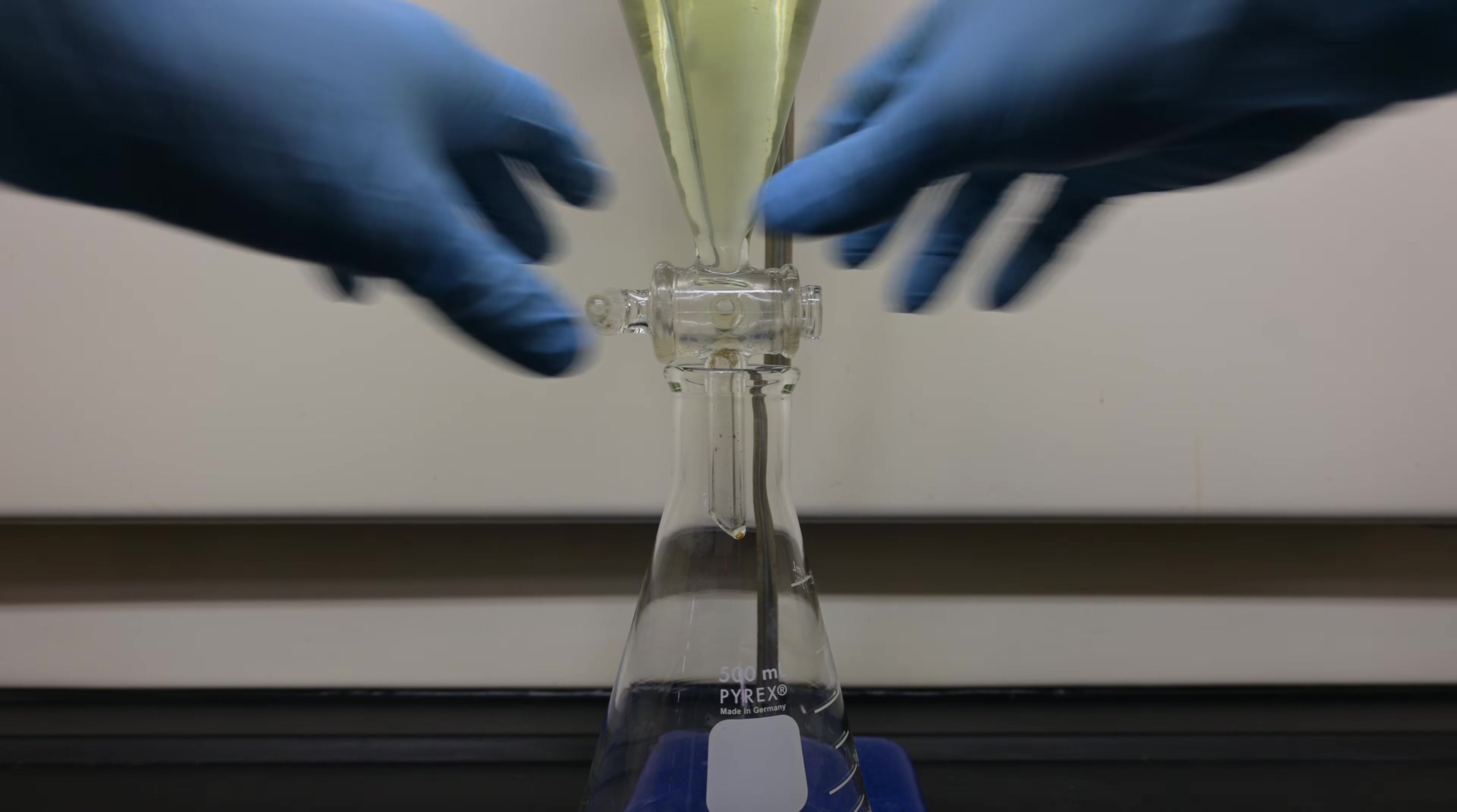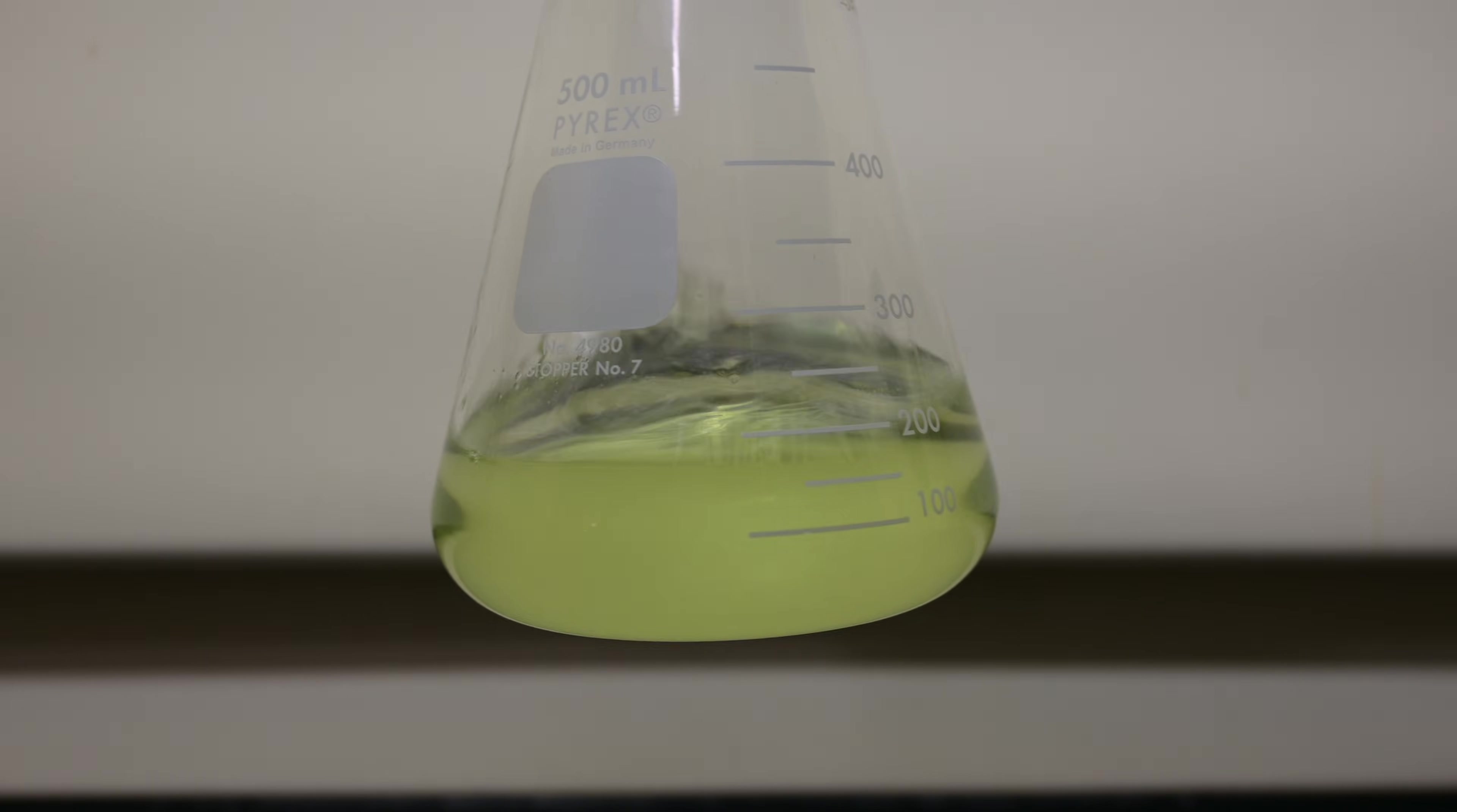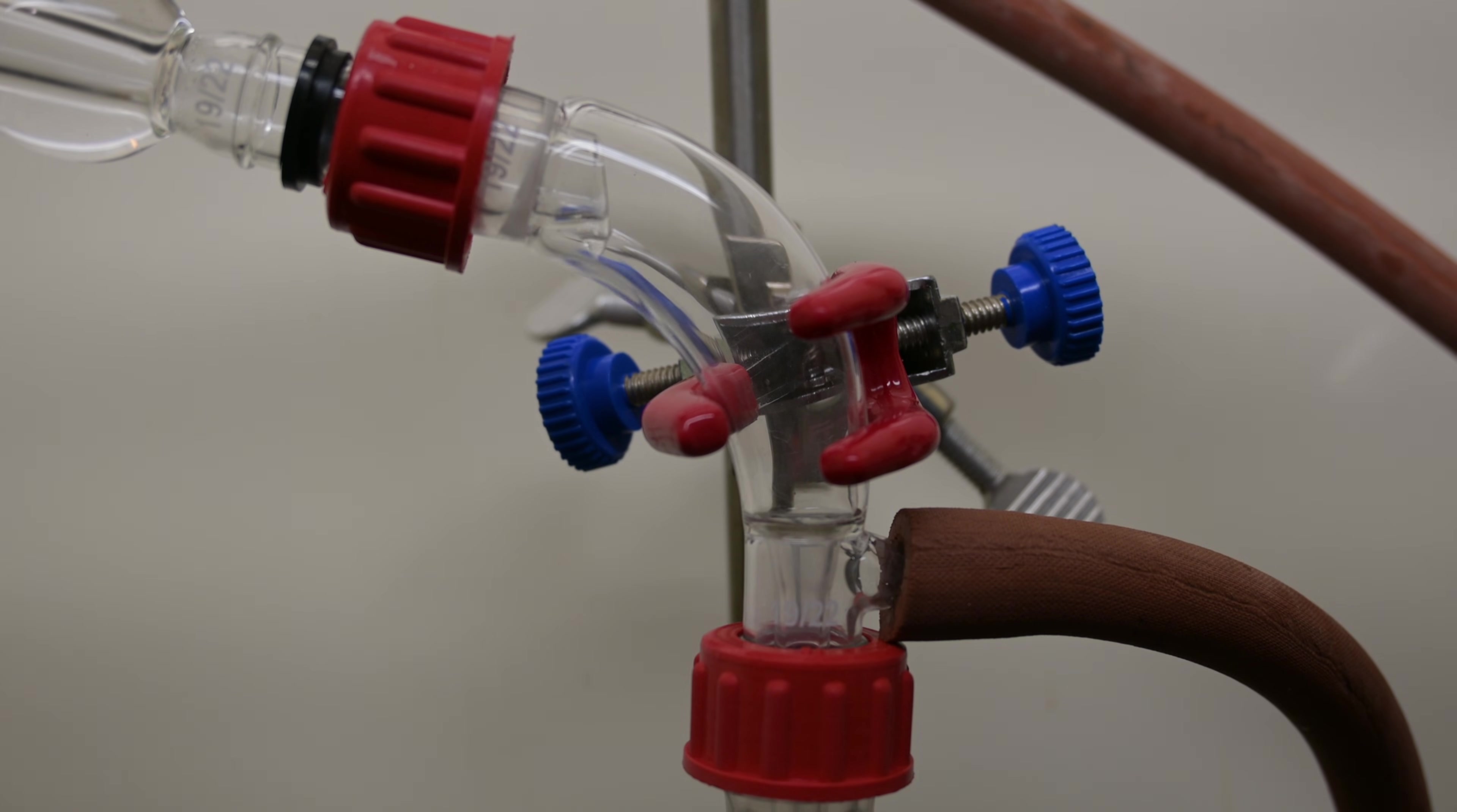Once the layers had separated, I transferred the bottom organic layer into a flask. Dichloromethane is a lovely solvent, but it's not the best for your health and the environment. So we, as green chemists, can collect and reuse the solvent. A simple distillation is used to do this. Dichloromethane boils at a relatively low temperature, so distillation goes quickly, and we are left with two flasks. One contains our extract and the other the clean solvent.